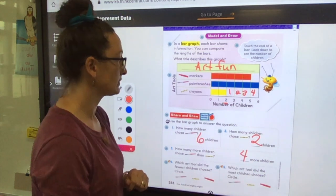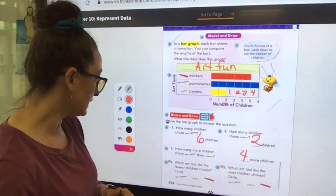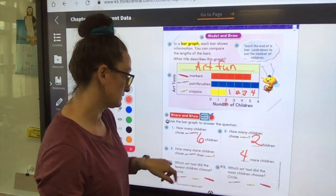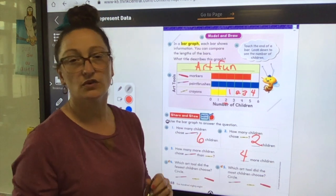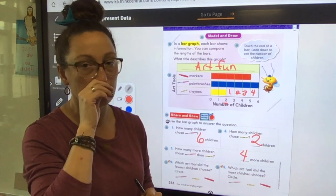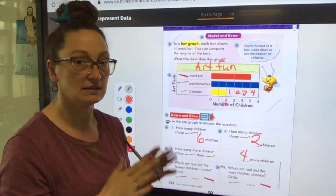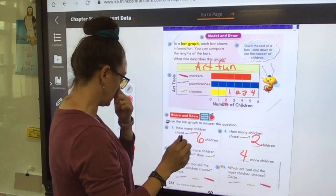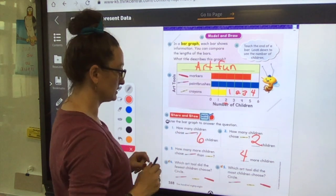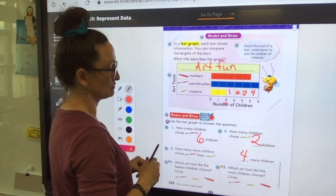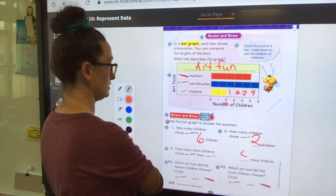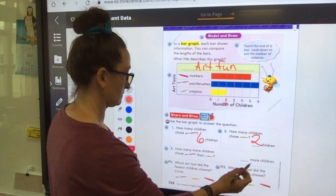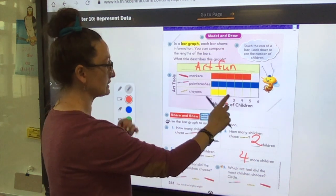Okay, look at number four. Which art tool did the fewest children choose? Circle it. Fewest, what does fewest mean? Do you remember? Fewest means the least, the least amount, so the smallest number. So look up here. Which art tool did the fewest kids choose? Which one has the smallest number?